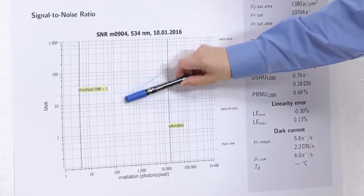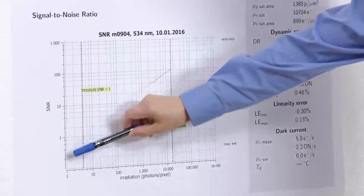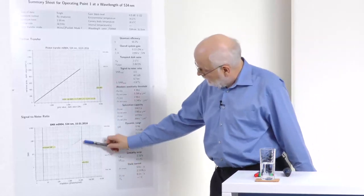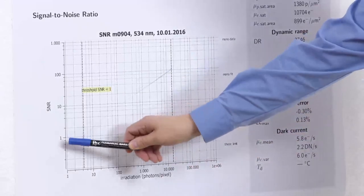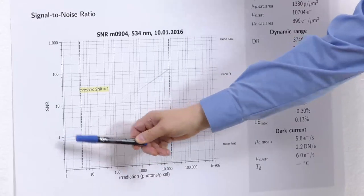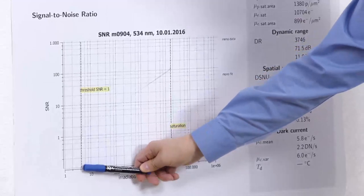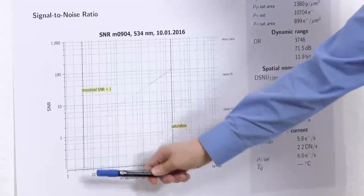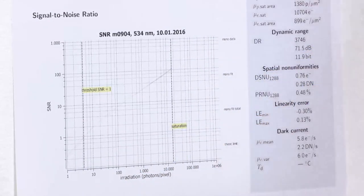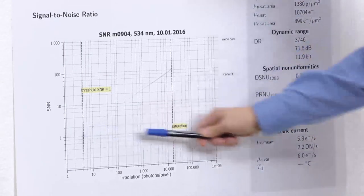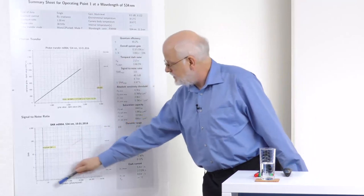Then the SNR curve goes parallel to the theoretical ideal camera and then it starts deviating, and this is the influence of the dark noise. You can also see what the saturation is — that means the brightest thing you can measure in photons per pixel. At the point where the signal-to-noise ratio is 1, meaning the noise is as large as the signal, this is defined as the absolute sensitivity threshold. In this example, the lowest you can see is just about 4 photons, and it goes up to almost 20,000 photons per pixel. The ratio of these two things is the dynamic range. So in this graph you get all the important information collected together.